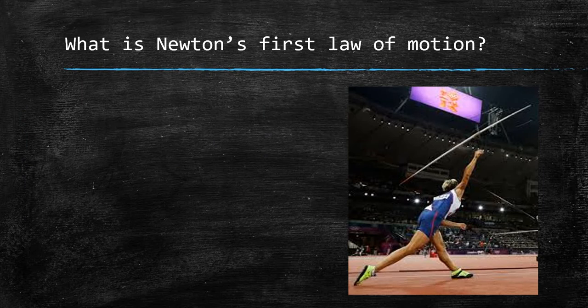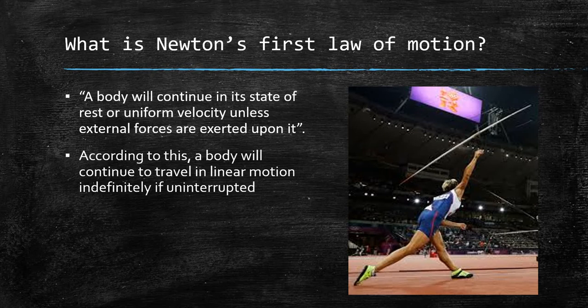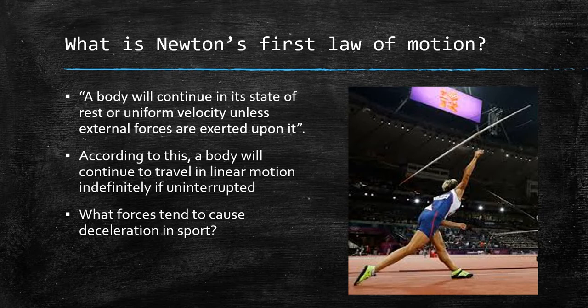If we recap Newton's first law of motion: a body will continue in its state of rest or uniform velocity until external forces are exerted upon it. So according to this, a body will continue to travel in linear motion indefinitely if uninterrupted — if no other forces act upon it, it will keep moving in that linear motion forever. However, we know there are forces that tend to cause deceleration in sports, such as friction, air resistance, and gravity or weight.